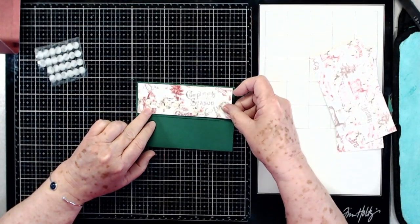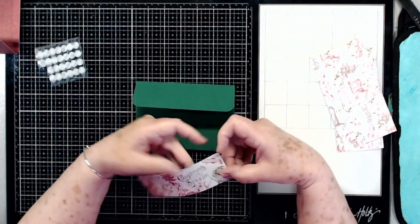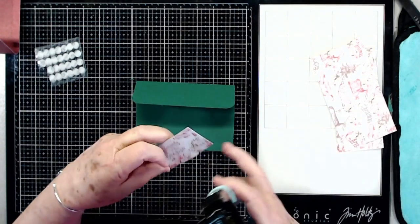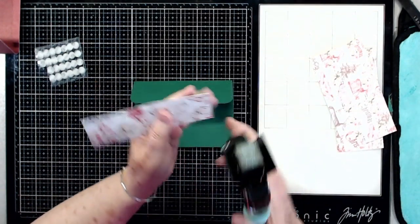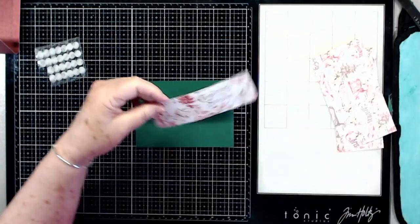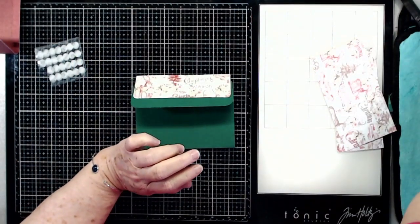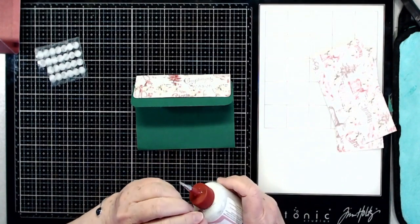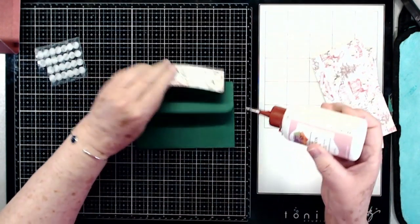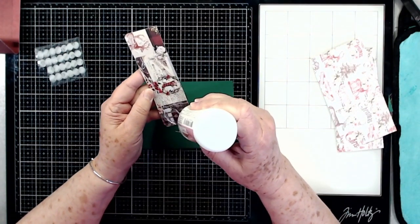I have a piece here that is one and three quarters by five and three quarters, and we're going to put that right there at the top. I like how it says Compliments of the Season. I'm going to round it with my quarter-inch rounder on the bottom right here. That's going to go down right there - I'm just going to use some of my Art Glitter Glue.